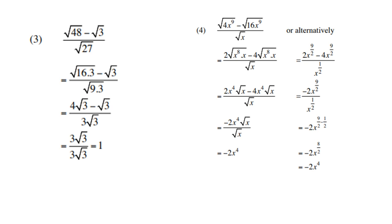Number 4: square root of 4x to the power 9. This is 4 times square root of 4 times square root of x to the power 9. Square root of 4 is 2, and x to the power 9 can be split as x to the power 8 times x. Then for the second term, square root of 16 is 4, and again x to the power 9 is x to the power 8 times x. Then we subtract the like surds. Square root of x to the power 8 is x to the power 4, because x to the power 4 times x to the power 4 is x to the power 8. So we have 2x to the power 4 minus 4x to the power 4, which gives negative 2x to the power 4. The remaining x terms cancel and the answer is negative 2x to the power 4.